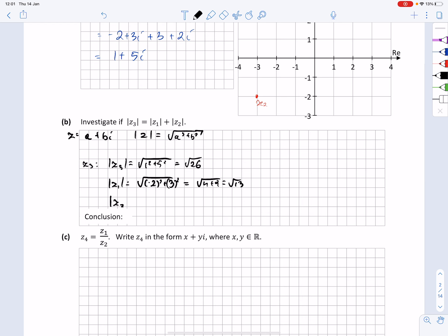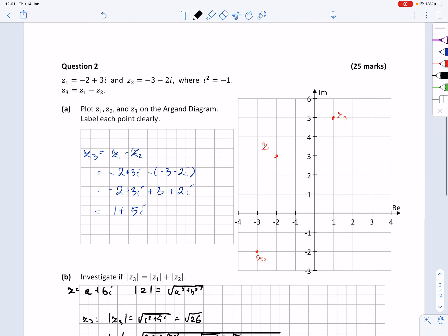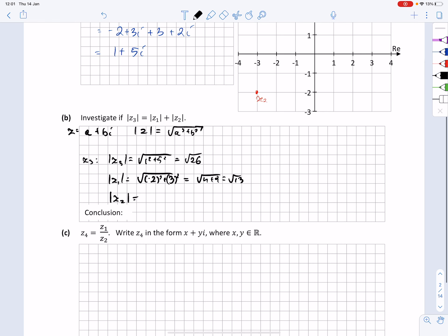And for Z2, Z2 equals minus 3 minus 2i, so root minus 3 squared plus minus 2 squared, and again, it's root 4 plus 9, which is root 13. And it's clear that root 26 is not the same as root 13 plus root 13, and that's the answer to this question.